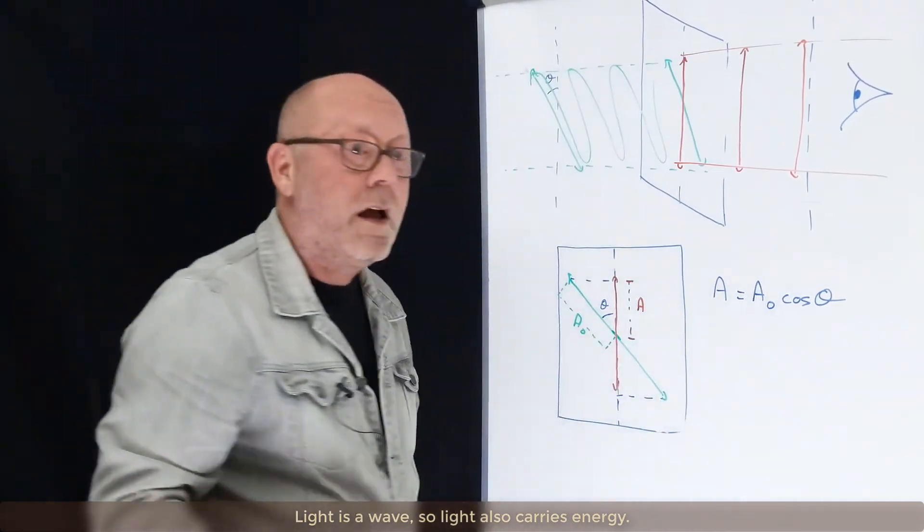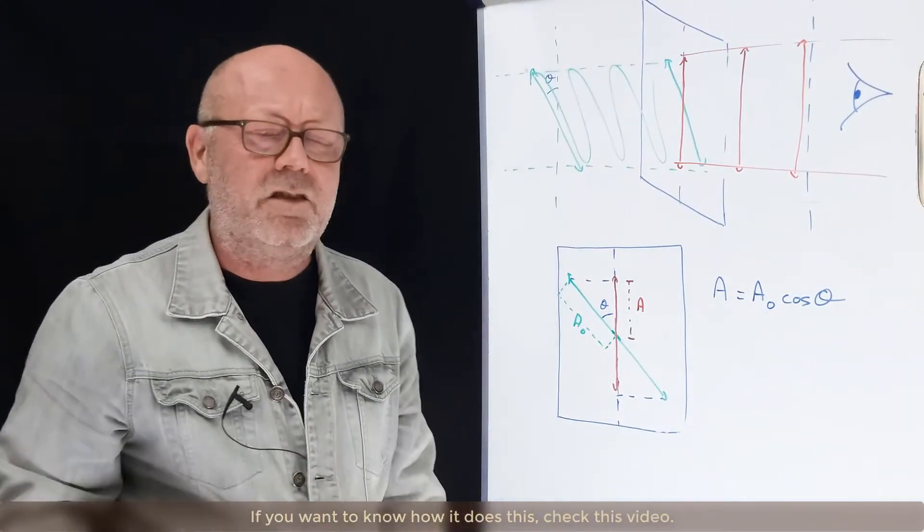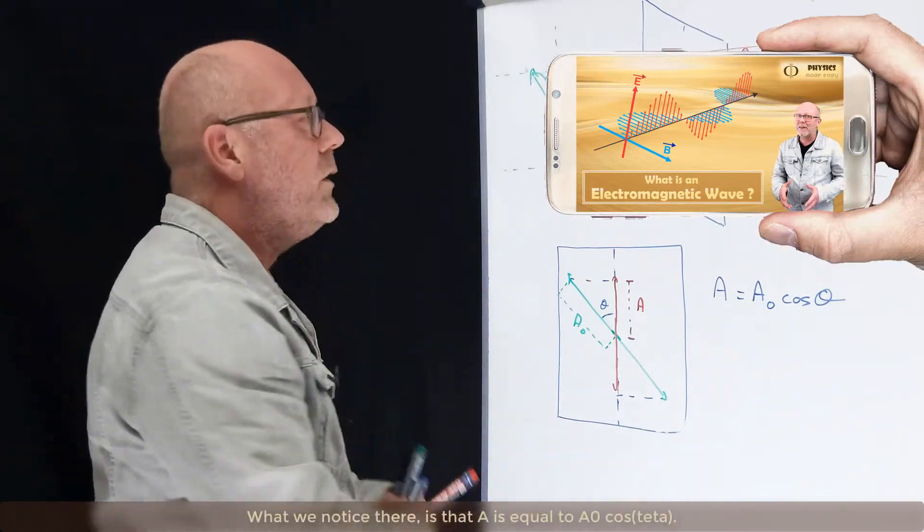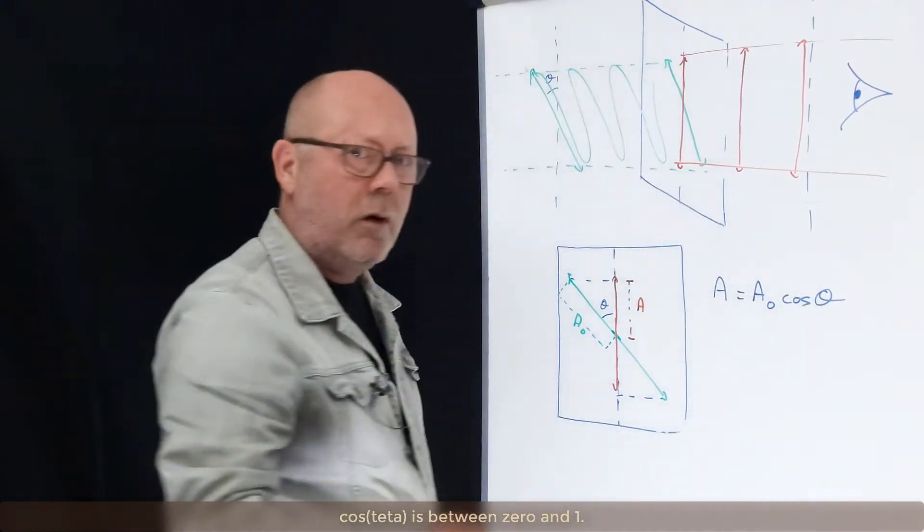Light is a wave, so light also carries energy. If you want to know how it does this, check this video. What we notice there is that A equals A0 cos θ. Cos θ is between 0 and 1.